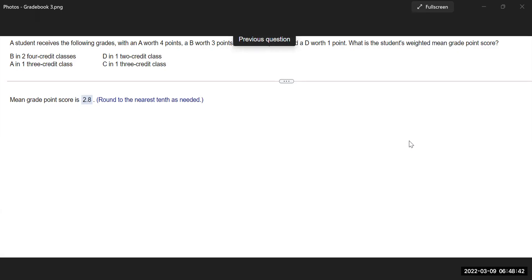A student receives the following grades with A worth four points and B worth three points. I think there should have been a C worth two points and a D worth one point. So we missed the C. I think when I was doing the screenshot, this thing came up. Now what is the student's weighted grade point score?